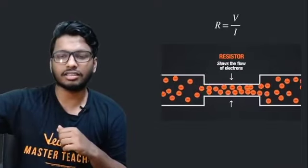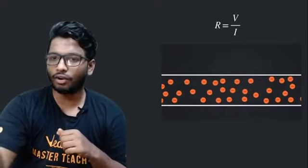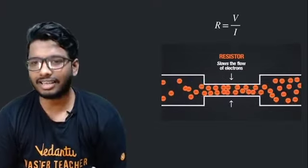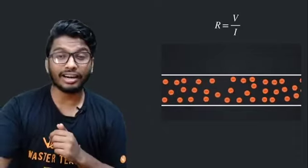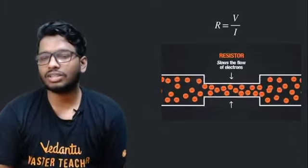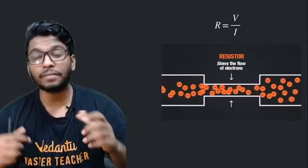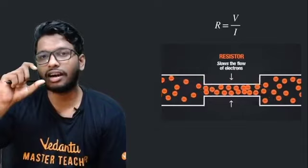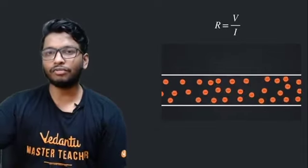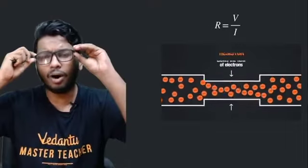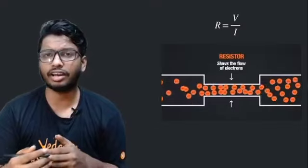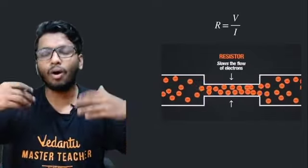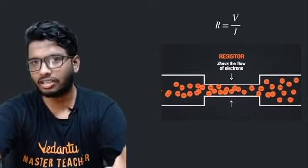Now, what does resistance look like in a circuit? Imagine a simple electric wire with electrons flowing from one end to another. When you add a resistor, it narrows the path, causing congestion and slowing down the flow of electrons, which decreases the current through the circuit. That is what a resistor does. The electrical component introduced in a circuit to increase resistance is called a resistor. Generally, all electrical equipment has some resistance because nothing is perfect — there's always some variation in the material or length of the wire.